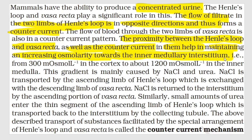The osmolarity in the cortex is 300 milliosmol, whereas in the medulla it is 1200 milliosmol — meaning less concentrated to more concentrated form. The concentration above is less, and as we come downward the concentration becomes very high. This gradient is mainly caused by NaCl and urea. Sodium chloride and urea set this counter current gradient.